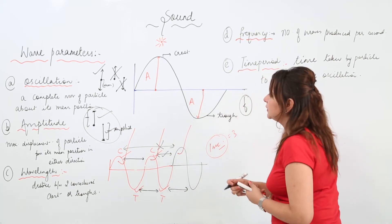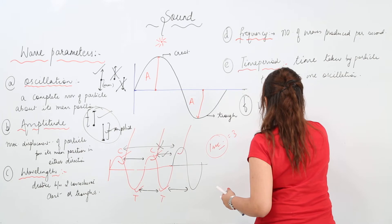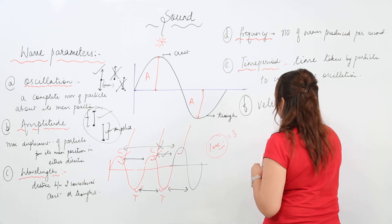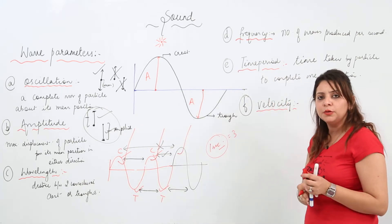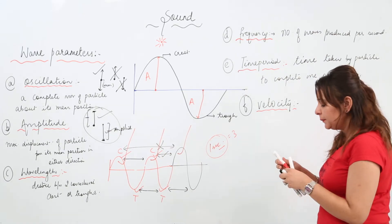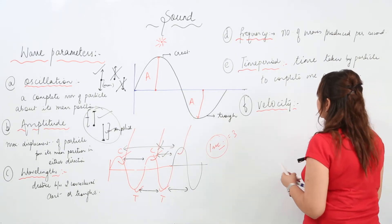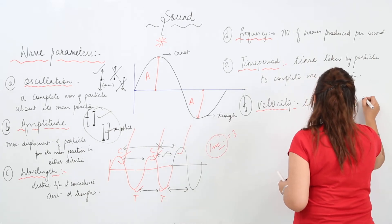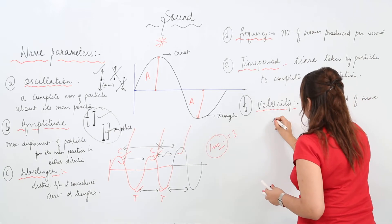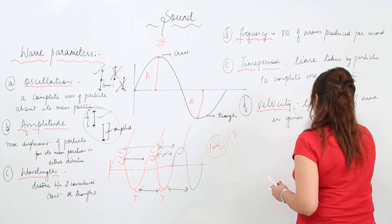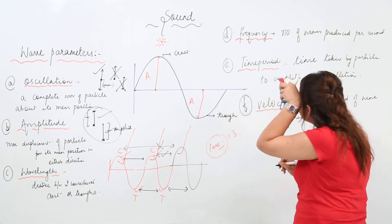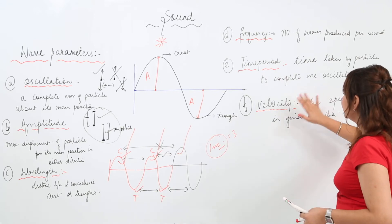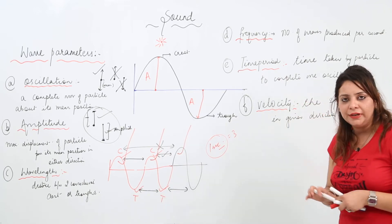Next we have velocity. As you know, velocity is speed in a given direction — we have already covered this in the chapter on motion. Here also, velocity describes the speed of a wave in a given direction, or we can say the distance travelled per unit time by a wave.